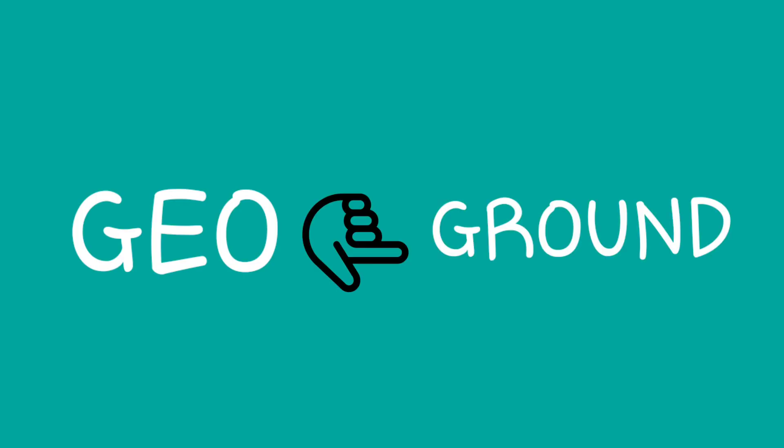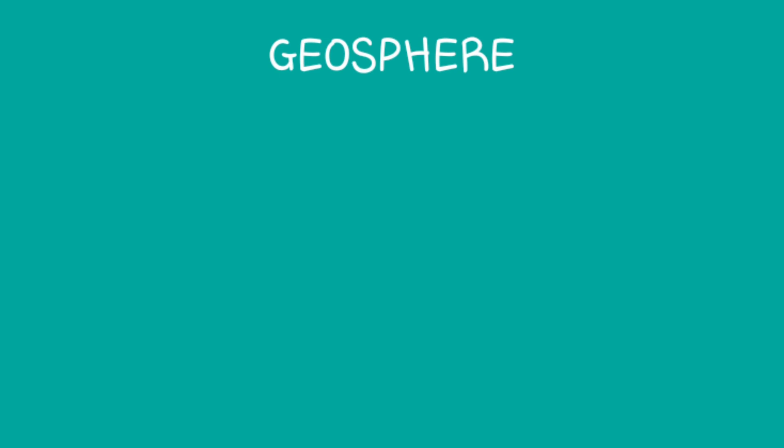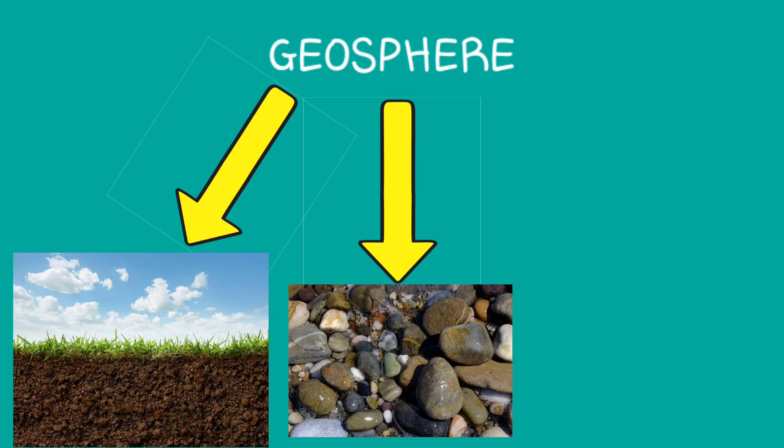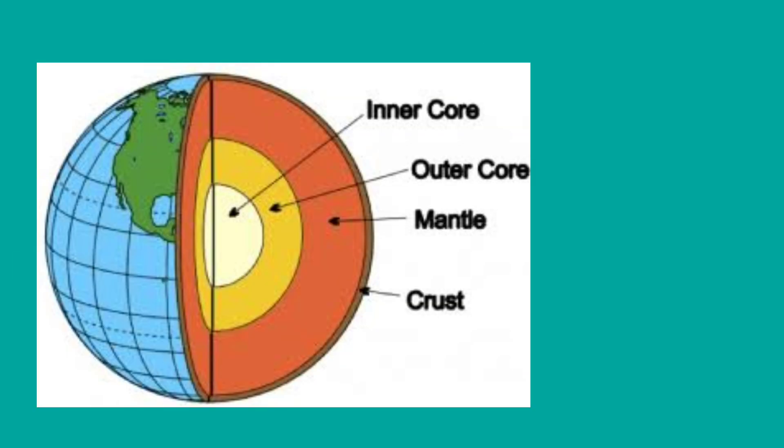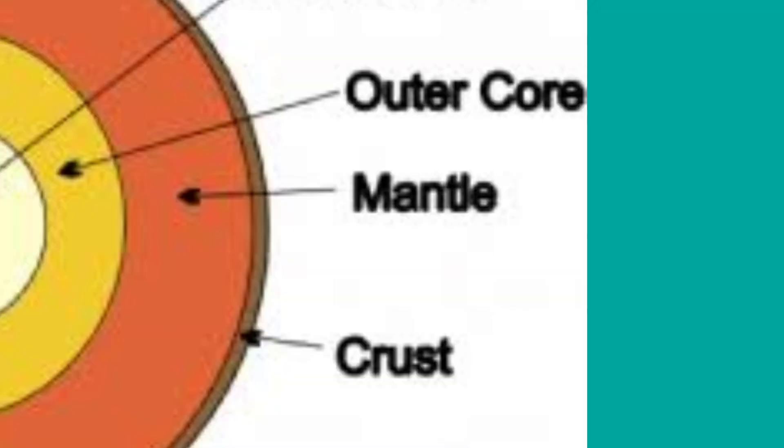Geosphere includes all the soil, rocks, and minerals present in the crust to the core of the Earth. It is divided into three layers: crust, mantle, and core. The crust is the outermost layer of the geosphere. It is made mostly of silicate materials.